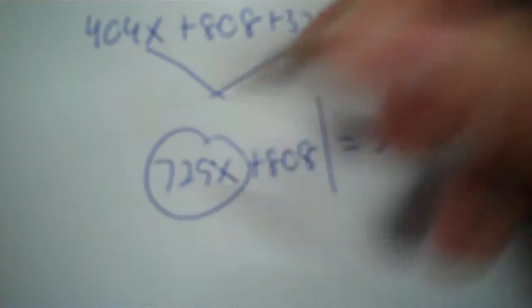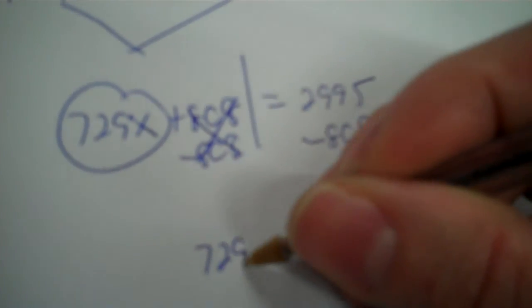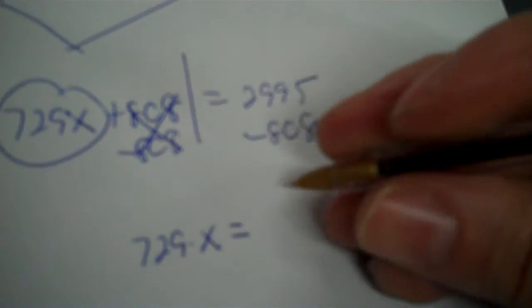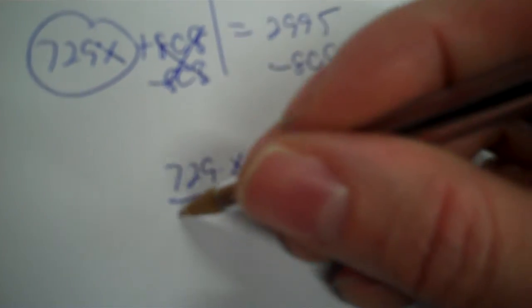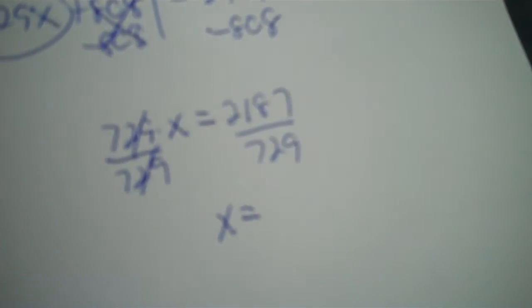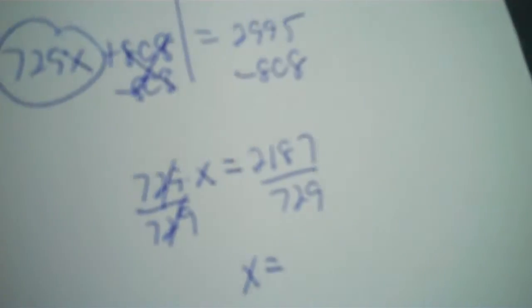So you get times and plus. You take out the plus by subtracting. So 2995 minus 808, and that's going to be 2,187. Now it's time to divide by the 729. So 2187 divided by 729 is 3.